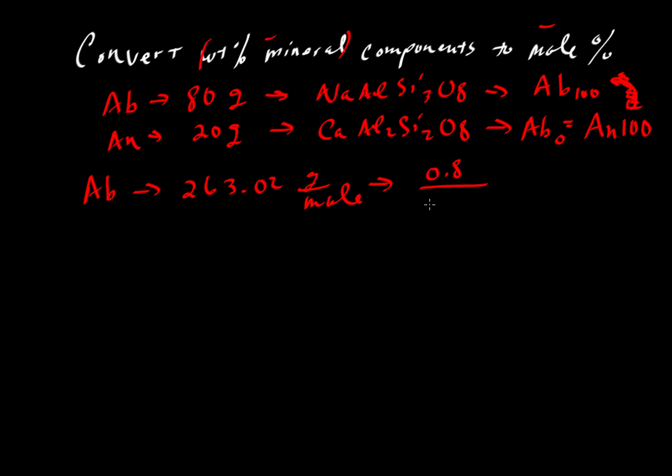and divide it by 263.02 grams per mole. Here we're writing 80% as a fraction. You could use 80, it really wouldn't matter. You'll end up with the same proportions. Notice that grams will cancel and mole will end up on top. And so we'll have the total number of moles of albite.